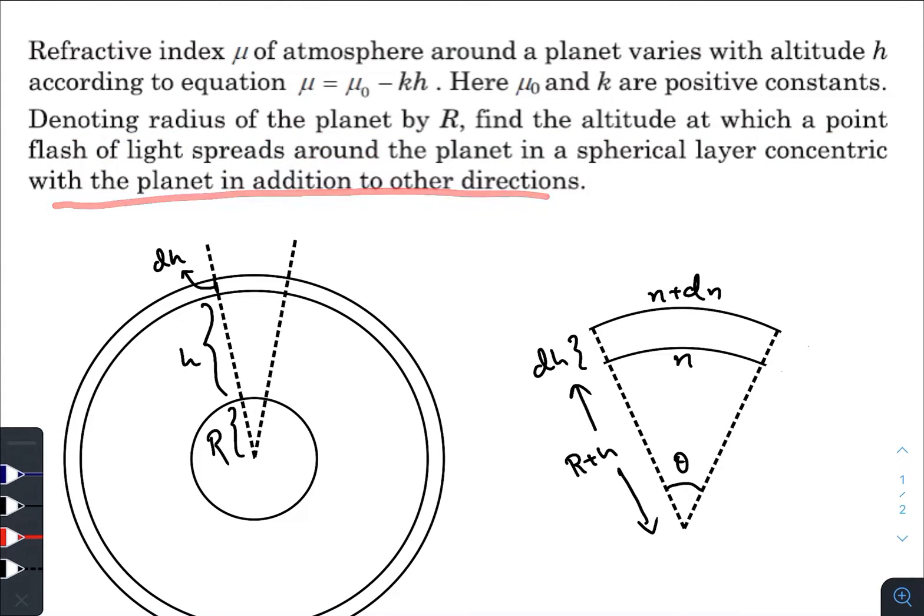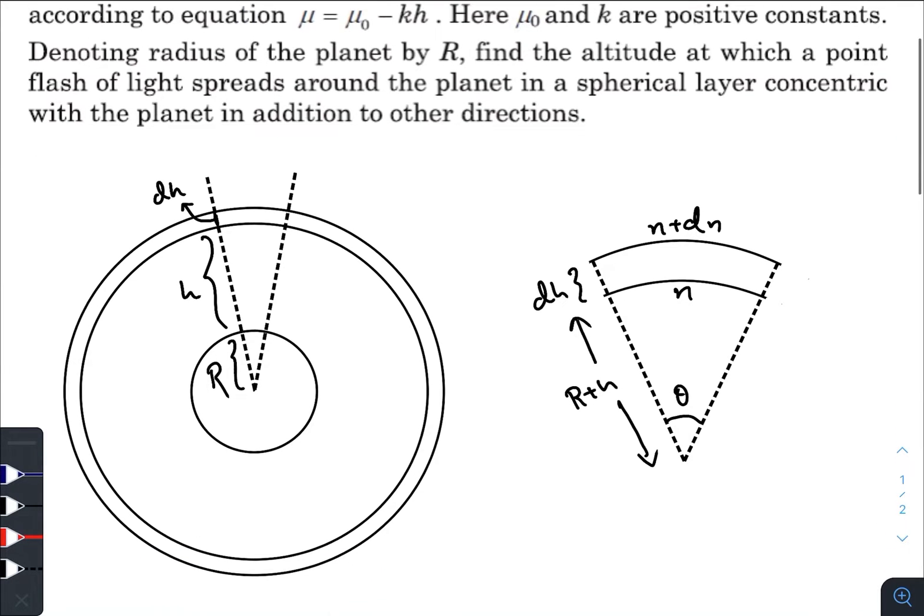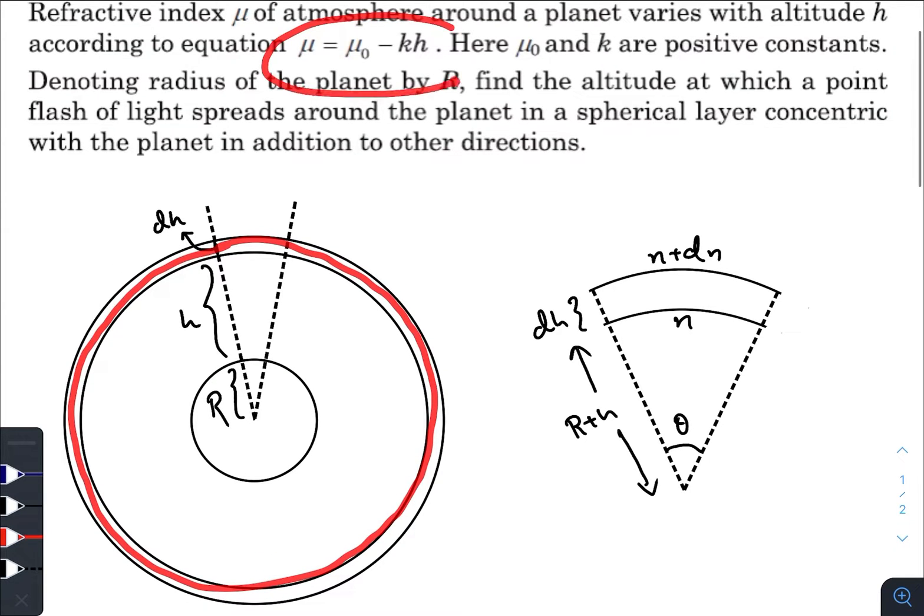Let me just tell you the question once again. That means for some altitude h, if I turn on a flashlight, the light will travel a circular path around the earth or the planet, keeping this point as the center. I have considered that the thickness of the beam as dh, altitude is h here, and this is how the beam will travel due to this varying refractive index.